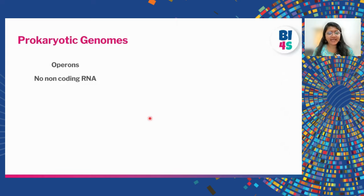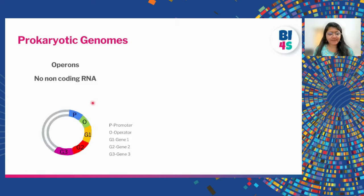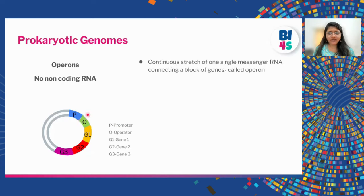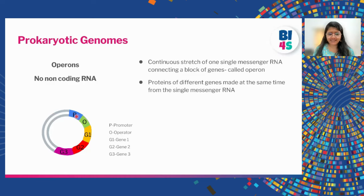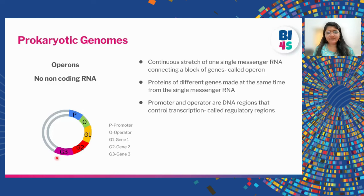In the case of the prokaryotic genome, genes are organized as operons — blocks of genes. For example, genes one, two, and three are in a block with regions called a promoter and operator. In an operon, a continuous stretch of genes gives rise to a single messenger RNA, starting from the promoter. The promoter and operator are regulators that decide when these genes are transcribed into RNA.